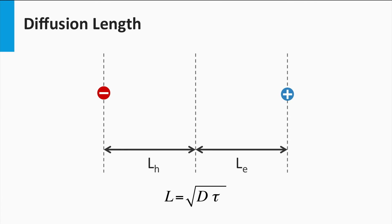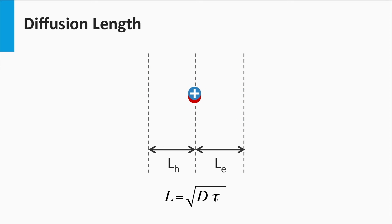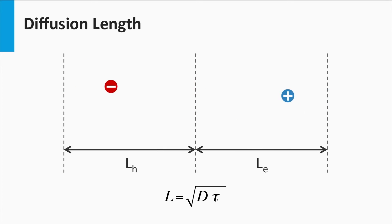Loss mechanisms like recombination determine the lifetime of the charge carriers. If the recombination rate is high, the lifetime of charge carriers is low. The diffusion length L is the average distance the excited charge carriers can move around, and is determined by the lifetime of the charge carriers. If the recombination rate is high, the diffusion length will be shorter; when the recombination rate is low, the diffusion length will be longer. The diffusion length and lifetime are related by a simple equation: L equals the square root of the product of D and τ, where D is the diffusion coefficient and τ is the lifetime.